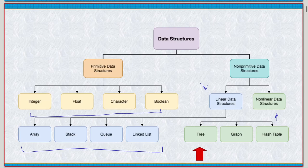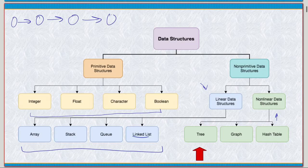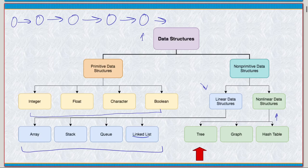Trees are some of the more common data structures we'll touch on. For linked lists, it's pretty versatile — just a bunch of nodes that contain some data and point to each other. But there's an issue: in a singly linked list, it's linear, meaning if the data we want is at the very end, we have to start at the beginning and traverse all the way to the end just to get it. That's not very efficient — that's actually pretty bad.